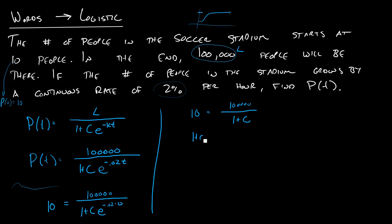So I'll be left with one plus C equals 100,000 divided by ten. And so I'll have one plus C equals 10,000. And then I'll get C equals 9,999.